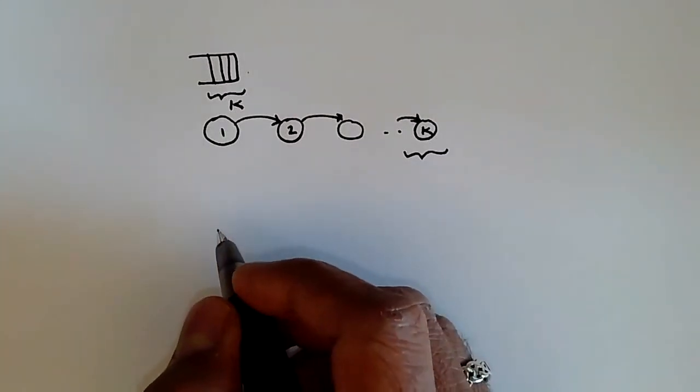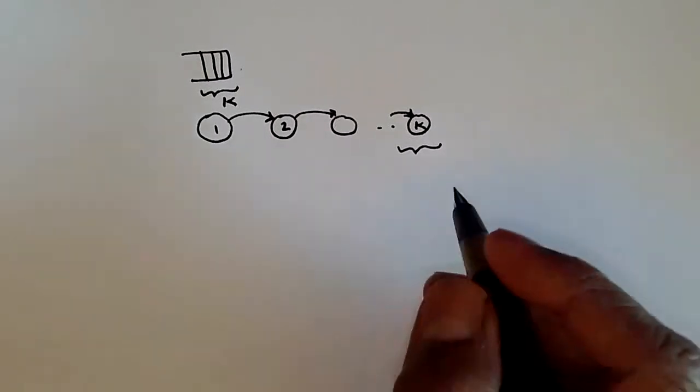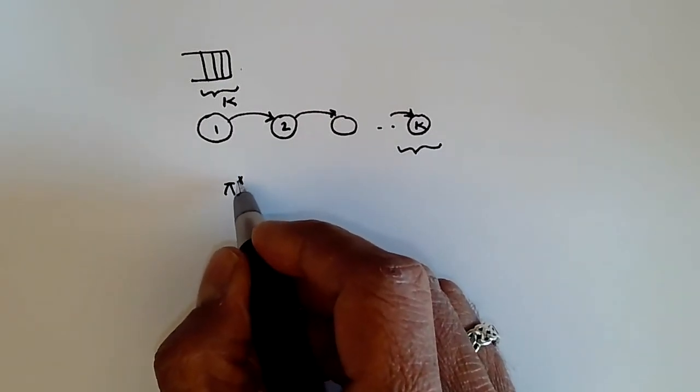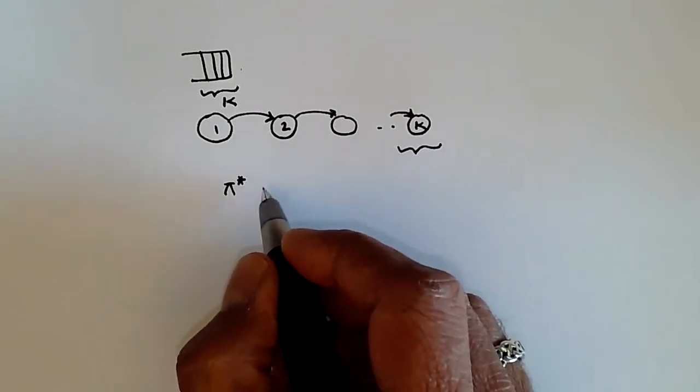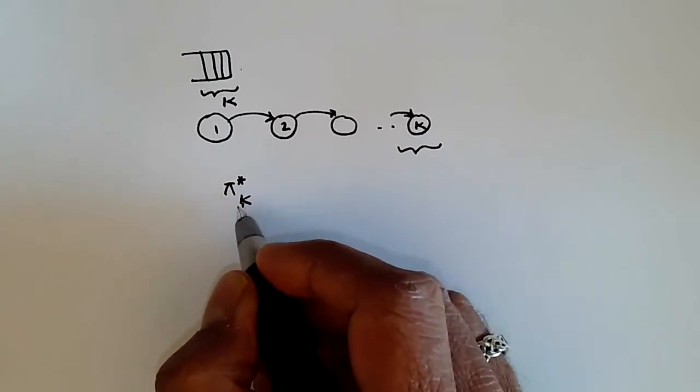So going back to our probability distribution, what we'd like to know, of course, is what is pi star for state k, and so we call that pi star k. That's the notation. So the subscript, this subscript over here denotes the probability of